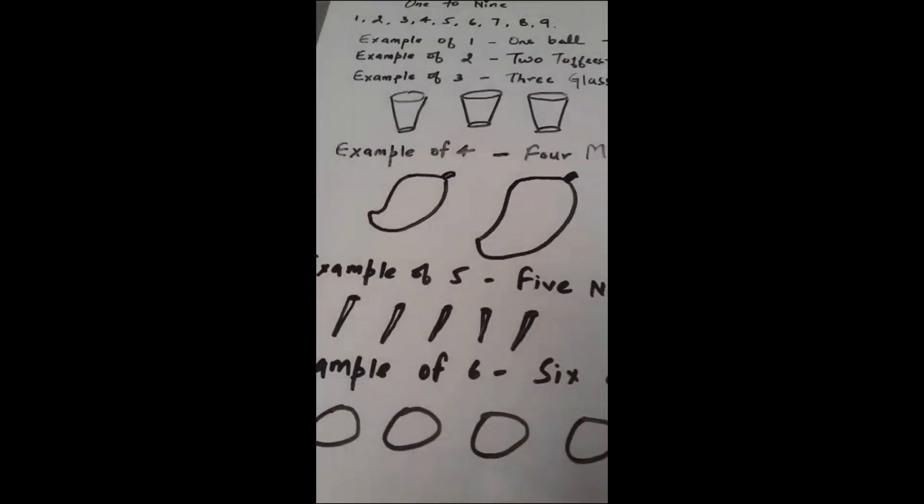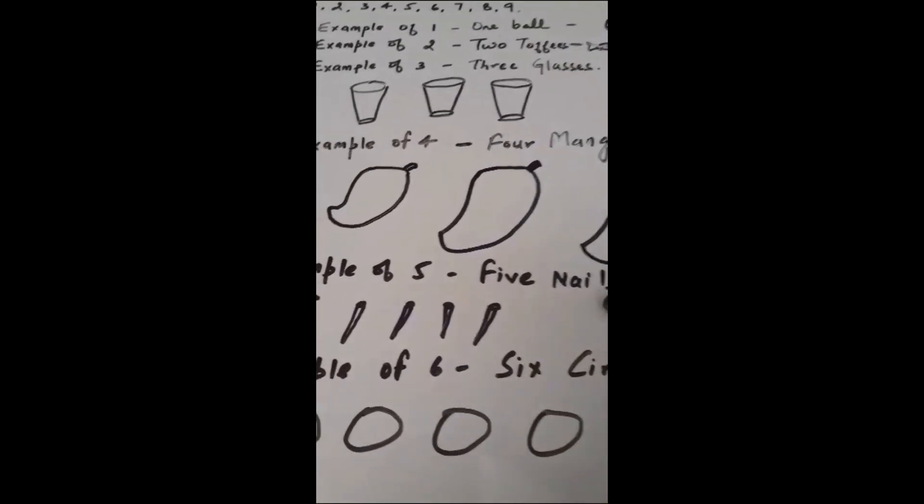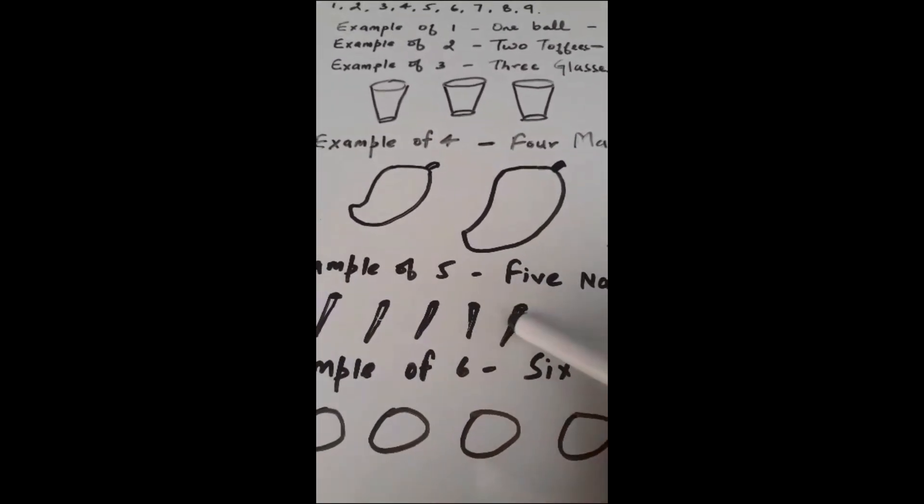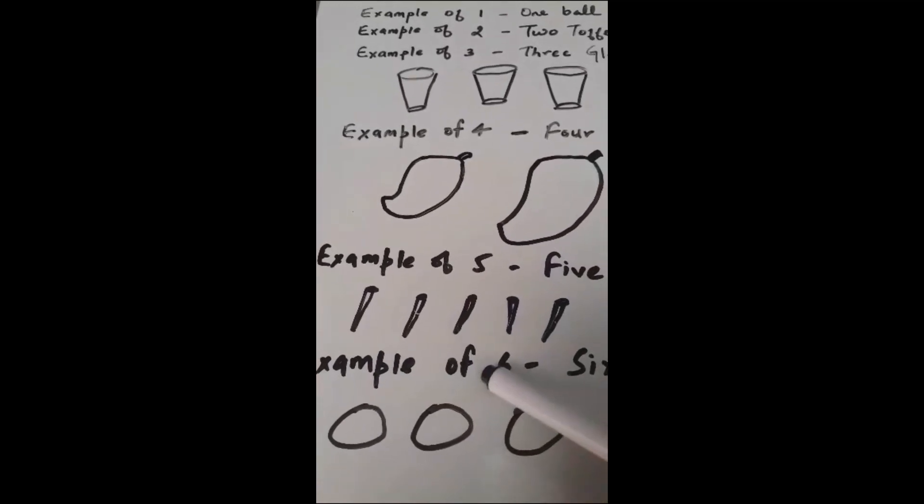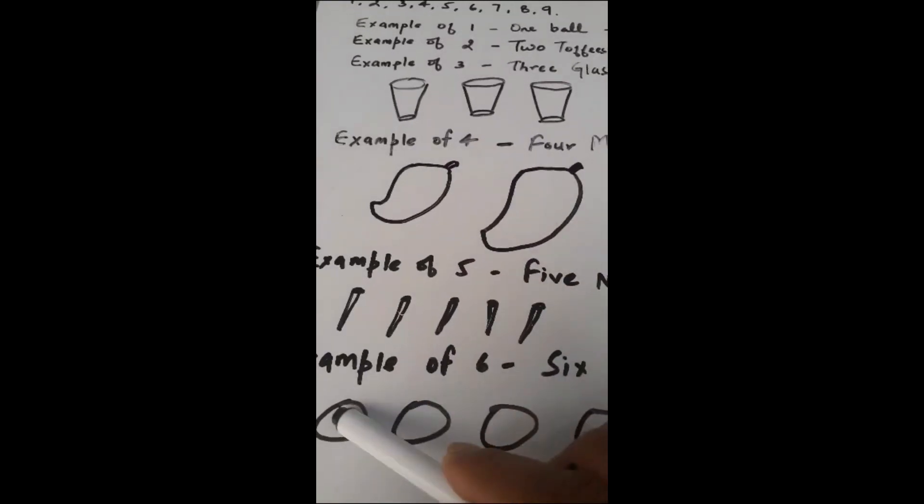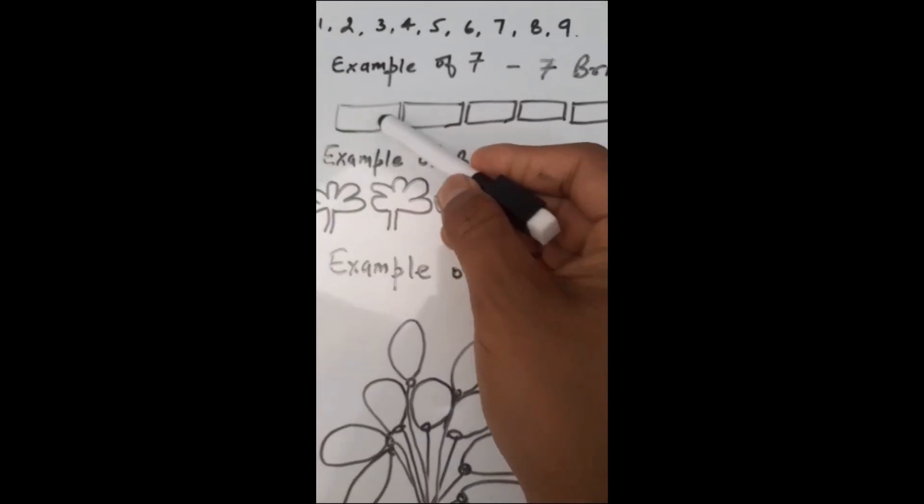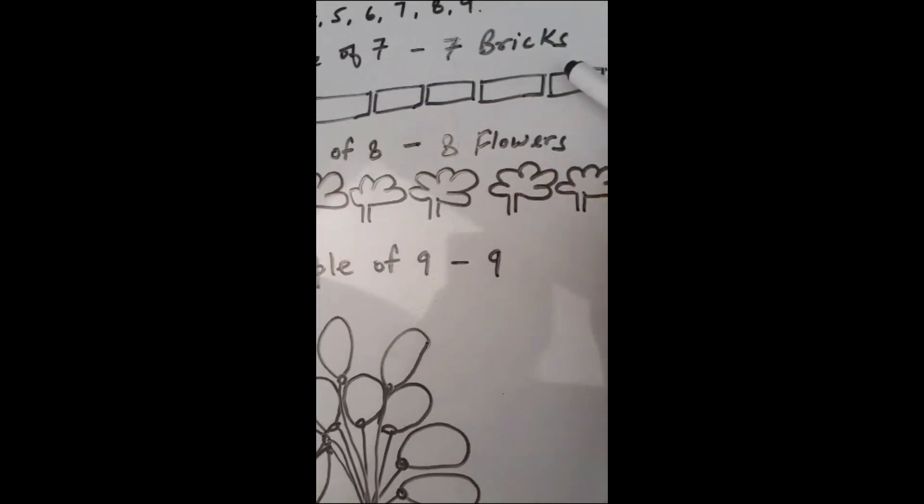Then we have to see example of 5: 5 nails, 1, 2, 3, 4, 5. Then we have to see next example of 6: 6 circles, so as you can see, this is 1, 2, 3, 4, 5, 6.